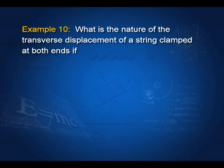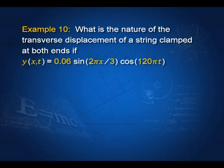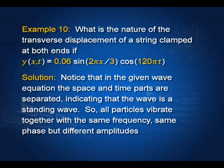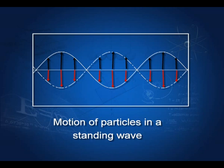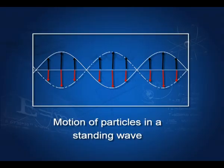What is the nature of the transverse displacement of a string clamped at both ends if the equation is y(x, t) equal to 0.06 sin(2πx/3) cosine(120πt)? The x part and t part are separated, so this equation signifies stationary waves. In a stationary wave on a string, you have loops going up and down. Particles in each loop move in phase, but with different amplitudes.